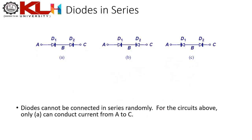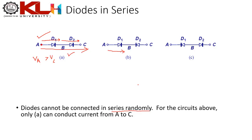Diodes cannot be connected in series randomly. If you want current to flow from node A to node C, both diodes must be oriented to allow that direction. In the correct configuration both diodes allow current from A to C; in an incorrect configuration one diode blocks the path.